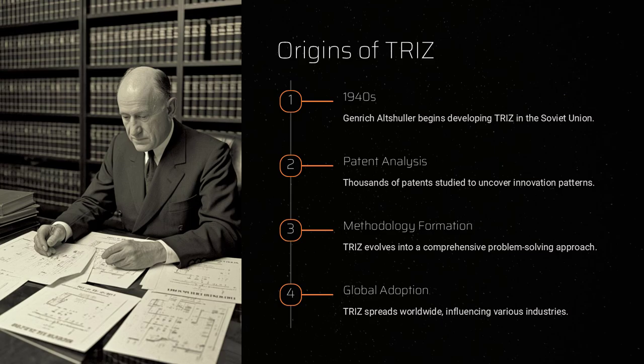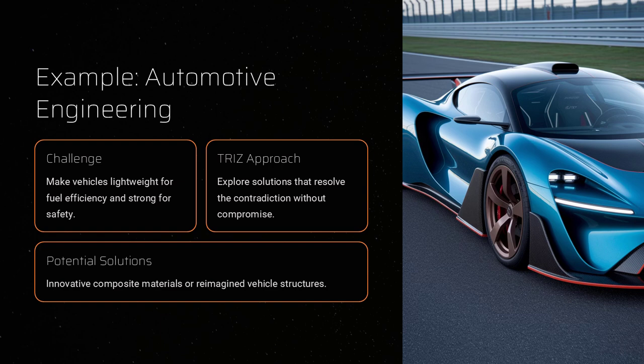One of TRIZ's most captivating features is its focus on resolving contradictions. Instead of accepting that a system must compromise between conflicting requirements, TRIZ challenges inventors to think beyond traditional trade-offs. For instance, consider a classic problem in automotive engineering: how to make a vehicle both lightweight for fuel efficiency and strong enough to be safe. TRIZ encourages exploration of alternative solutions — perhaps by using innovative composite materials or reimagining the vehicle's structure entirely.